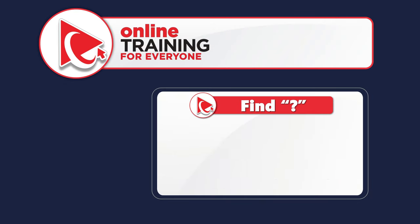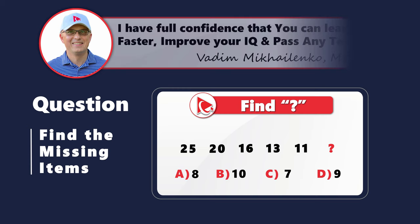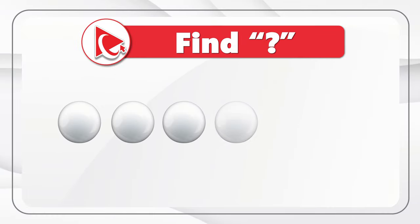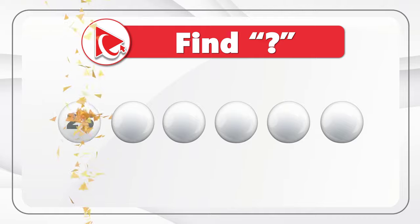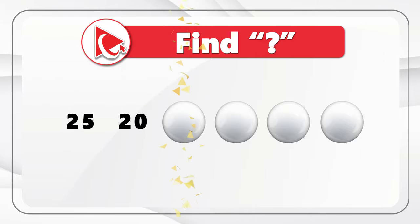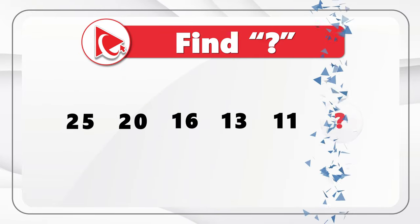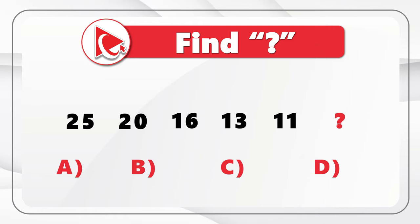I enjoy solving pattern questions because they're so easy to understand, but sometimes not so easy to solve. We're presented with a sequence of numbers and need to find the missing number, which is the next in the sequence. The numbers are 25, 20, 16, 13, 11, and then comes the missing number. You need to calculate the missing number from four possible choices: A is 8, B is 10, C is 7, and D is 9.